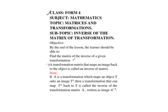A transformation matrix that maps an image back to the object is called an inverse of the matrix. Note that if A is a transformation which maps an object T onto an image T prime, then a transformation that can map T prime back to T is called the inverse of the transformation matrix A, and is written as A⁻¹.